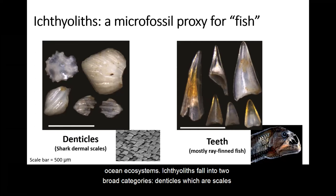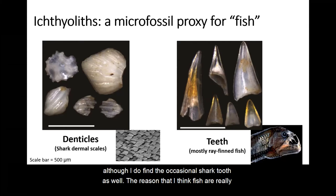Ichthyoliths fall into two broad categories: denticles, which are scales from sharks and other elasmobranchs, and teeth, which are almost exclusively ray-fin fish, although I do find the occasional shark tooth as well.